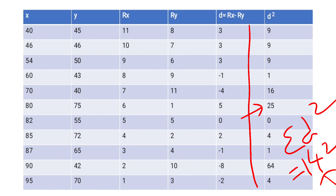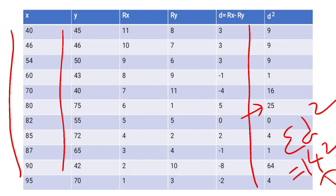The only difference in this type of problem is that marks are given instead of ranks. You have to find the Rank of X and Rank of Y, and the rest of the procedure is the same as when ranks are given directly. Since no marks were repeated in either X or Y, you could easily find the ranks and calculate the answer.